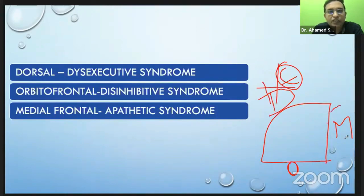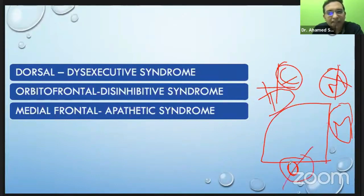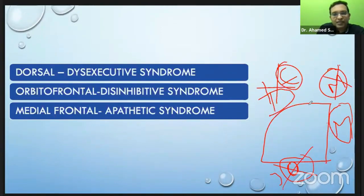If something goes wrong with the mesial or medial side, the patient has decreased motivation — remember M4M — the patient becomes apathetic, developing an apathetic syndrome. With orbitofrontal involvement, the patient gets disinhibitive syndrome — behavioral disturbance, social problems, and impulsive behavior. So remember: dorsal gives disexecutive syndrome, medial gives apathetic syndrome, and orbitofrontal gives disinhibitive syndrome. I have just described the frontal lobe for you.